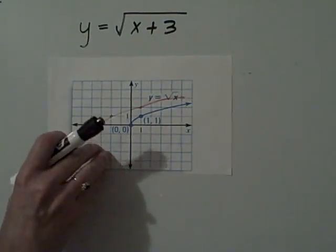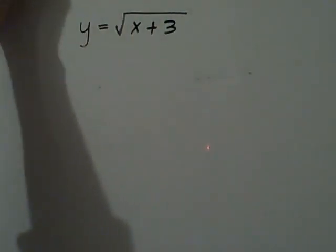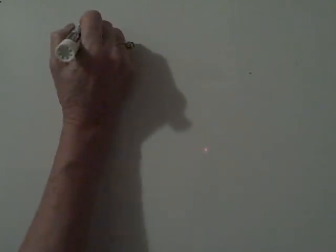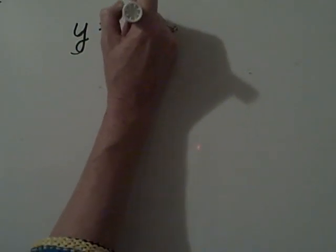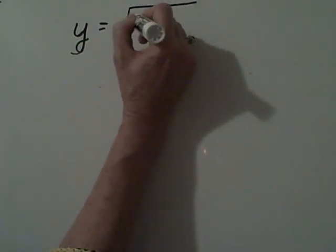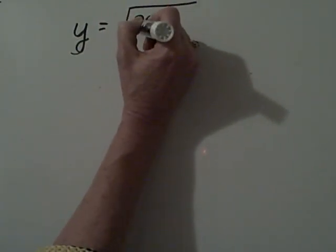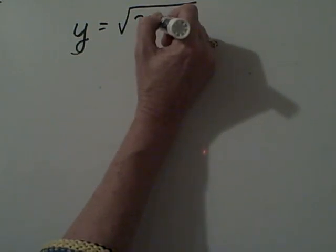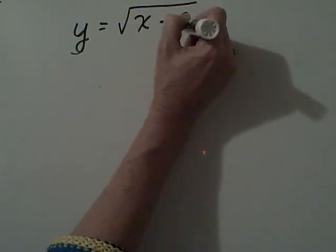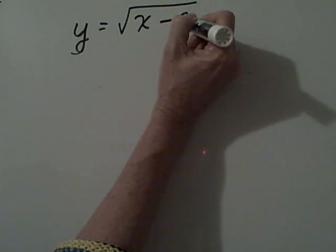Now what happens in the case when it shifts both ways? So let's look at that graph. Y equals the square root of x minus two minus three.